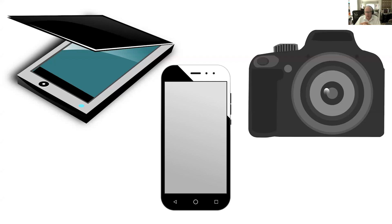Is one type of device better than another? Not really — they're all completely valid and do the job. From the standpoint of image quality, a flatbed scanner is preferable because it holds the document flat, so it's even all over, not skewed, and everything on the document or image is visible. There are slight advantages to using a flatbed over cameras and smartphones.